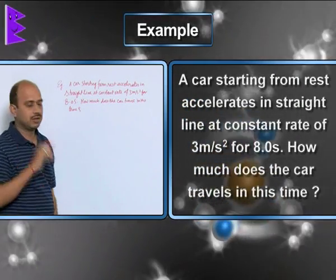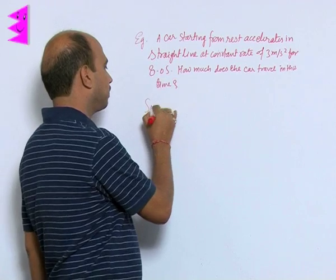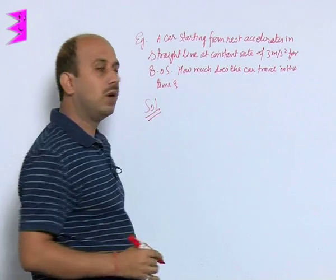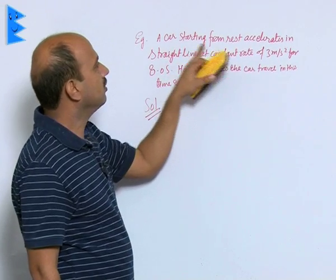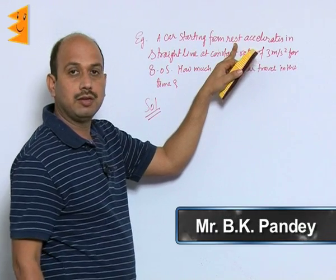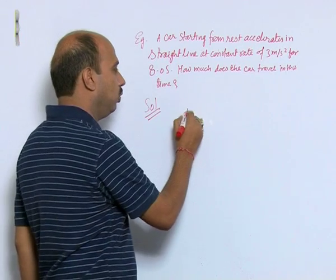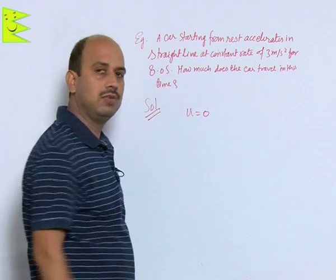So, you have to calculate distance. Now, first you see what quantities are given in this question. First one, car is starting from rest, it means initial velocity is 0. So you can write u equals 0.